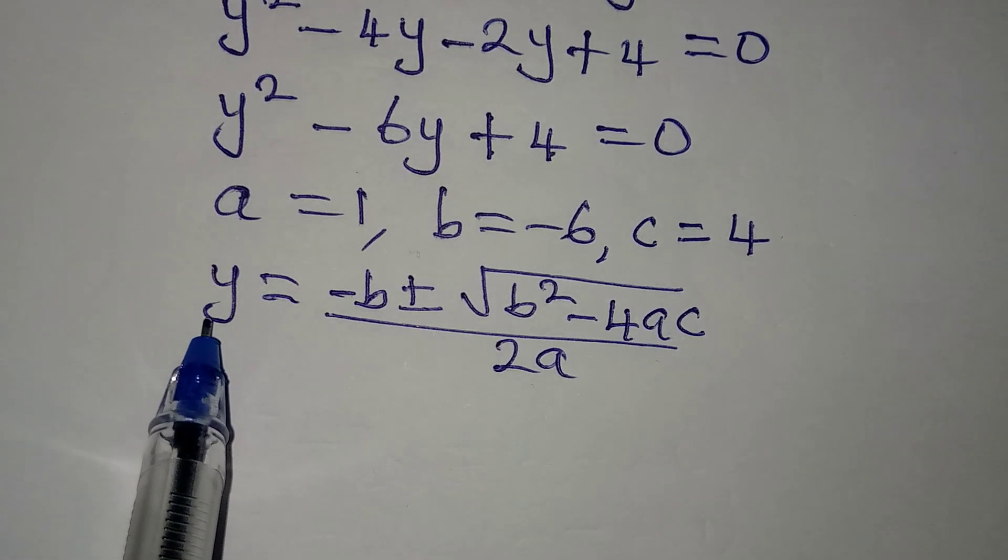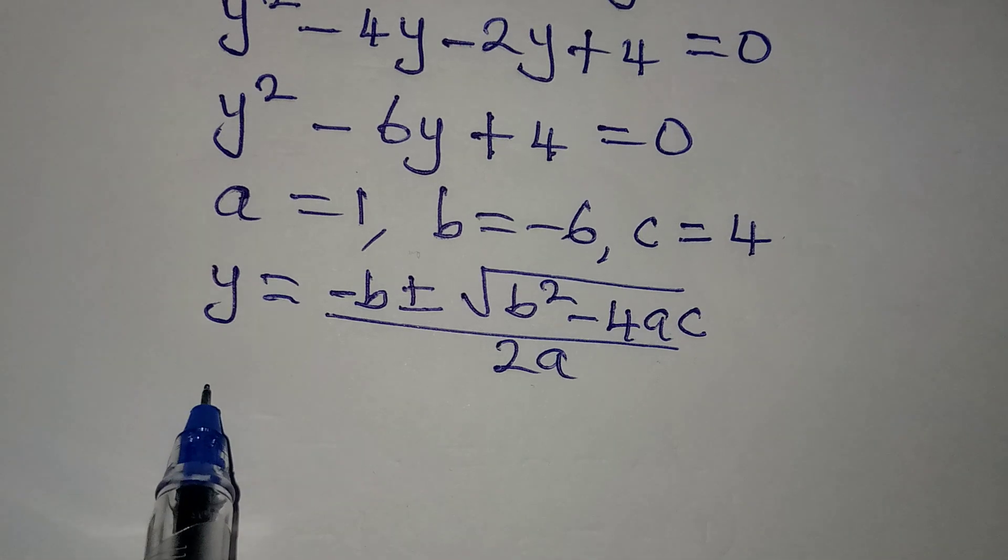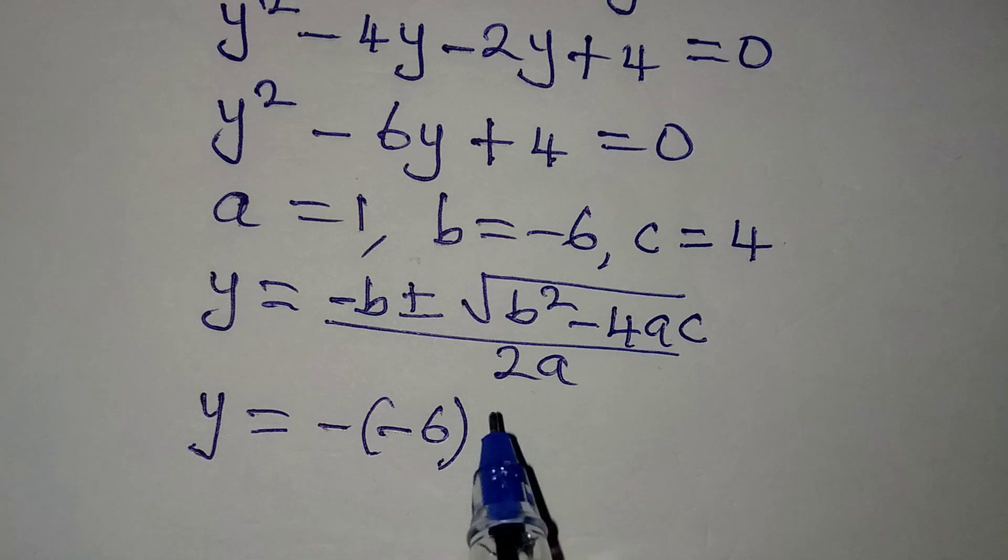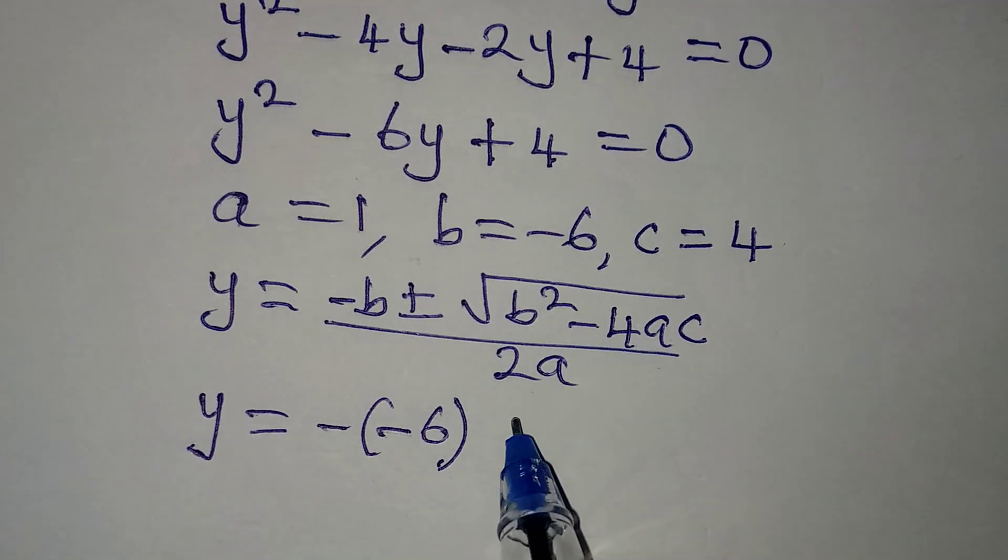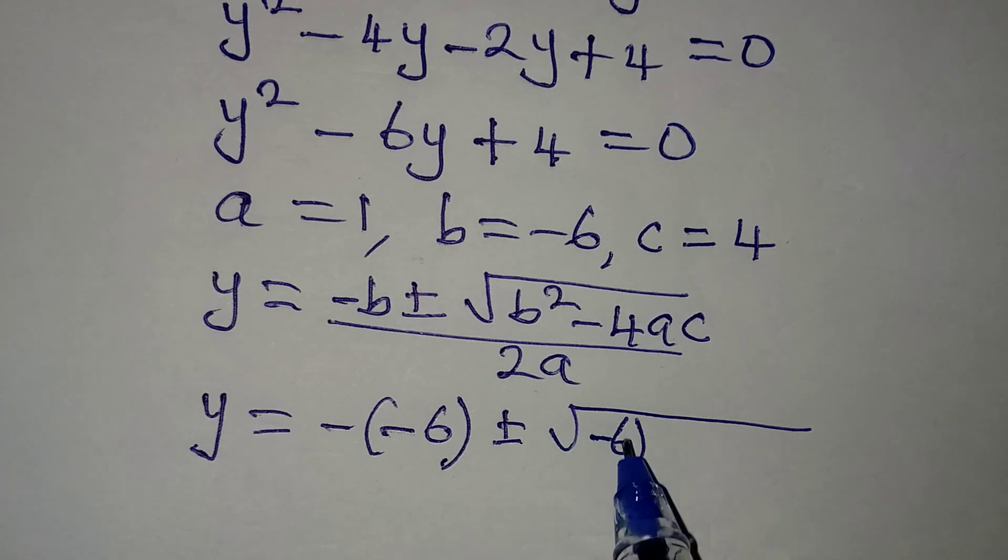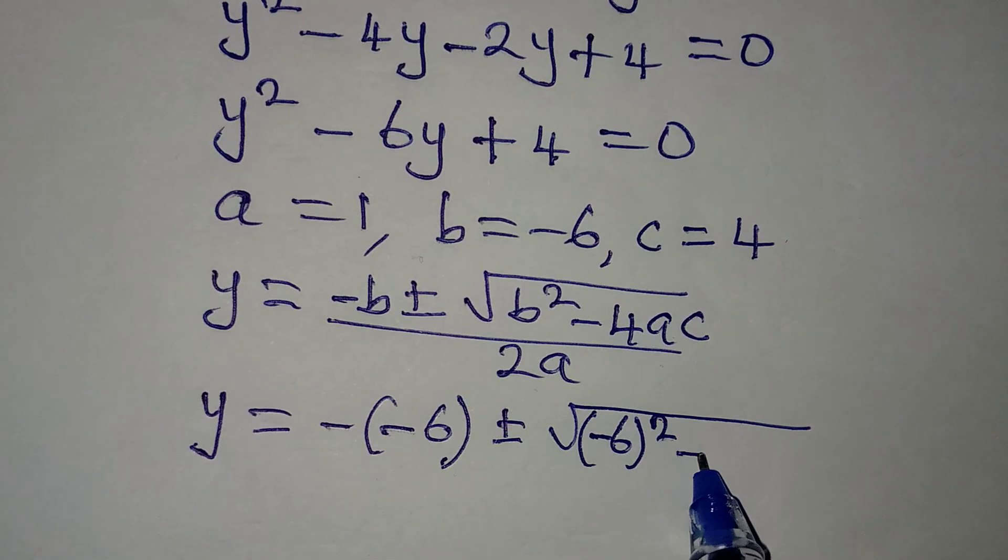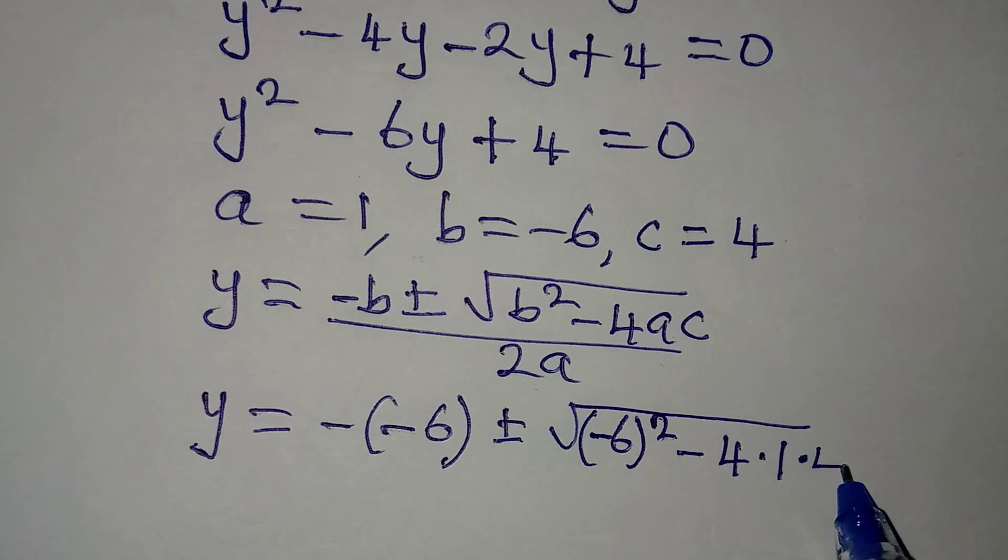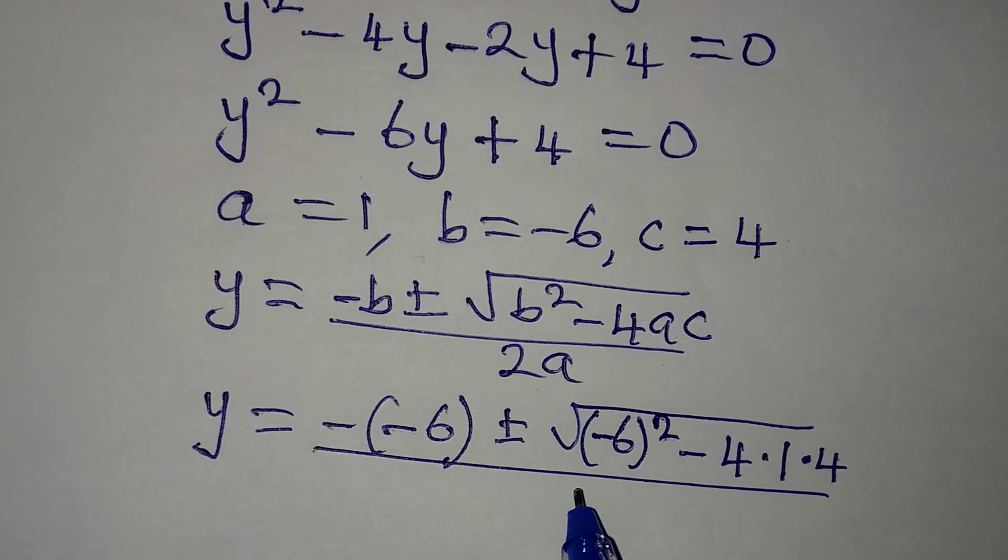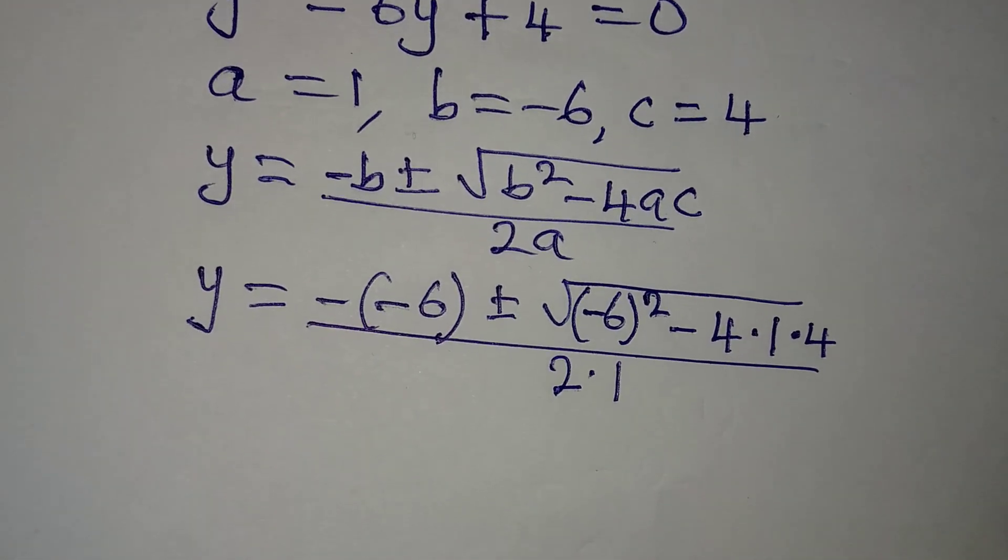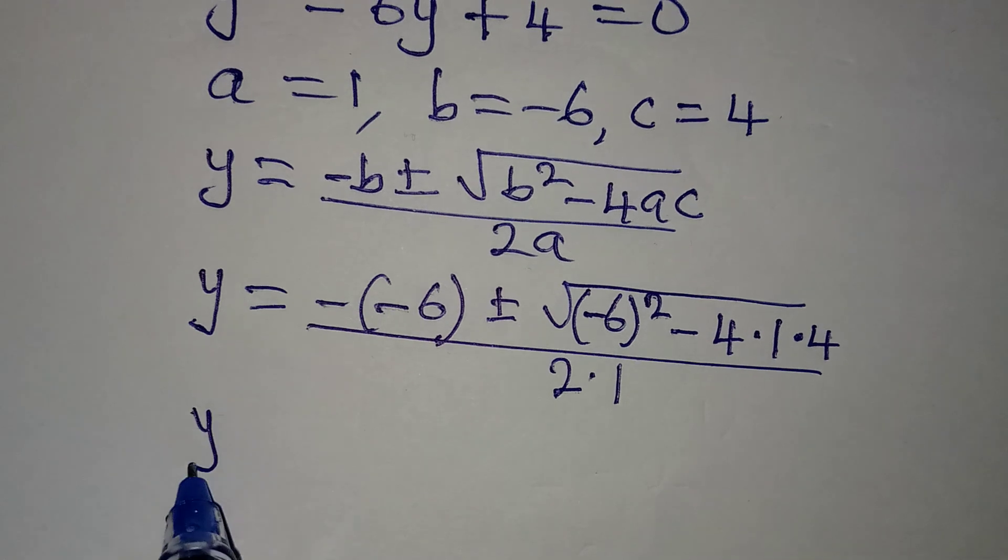So now y will be equal to -(-6) ± √((-6)² - 4 times 1 times 4), and the whole of this will be over 2 times 1, because a is 1.